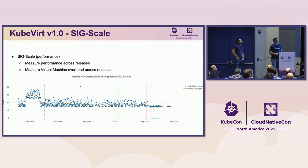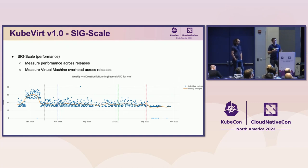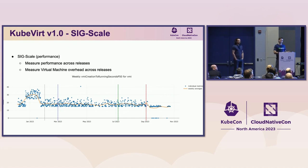Starting with SIG Scale — this is an important concept in the world of virtualization and computing. We need to be able to scale and be performant. This SIG's charter was to focus on how KubeVirt can scale, how it can be performant, and provide guidance across the project, influence pull requests, and try to make things more performant and scalable.